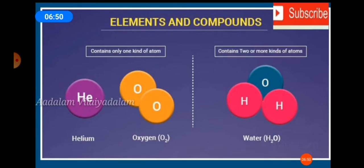What is a compound? A compound is a pure substance composed of two or more elements combined together chemically in a fixed ratio by mass. Examples: water, common salt, sugar, etc.